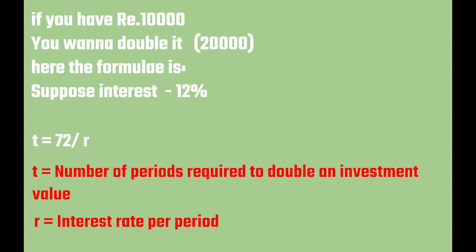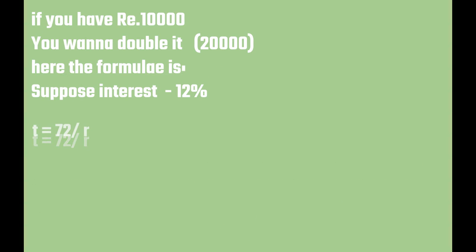So, in this problem, our interest rate is 12%, right? So, simply 72 divided by 12, that is 6 years.